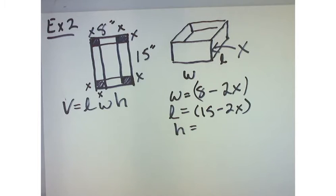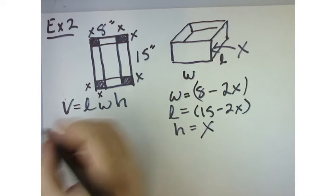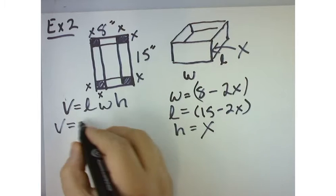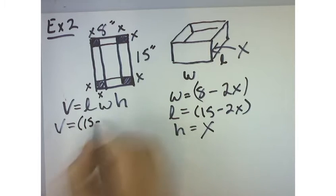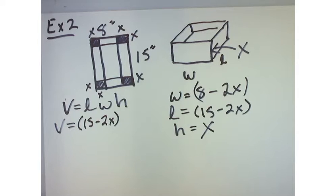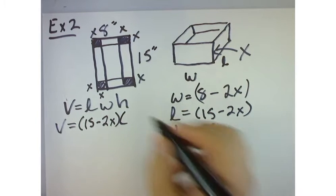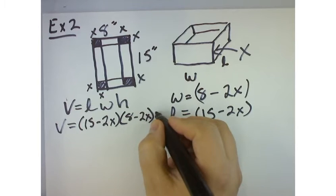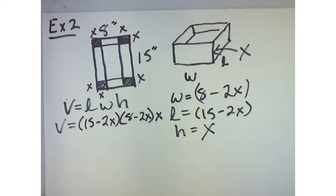x. So then my volume is actually 15 minus 2x times the quantity 8 minus 2x times x. Does that make sense to you guys?